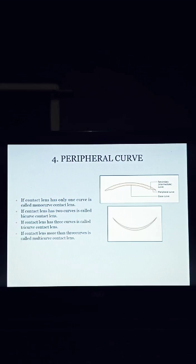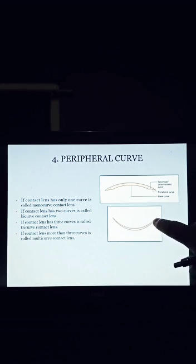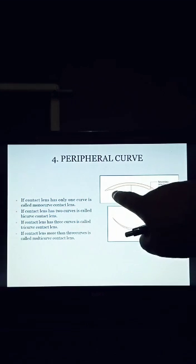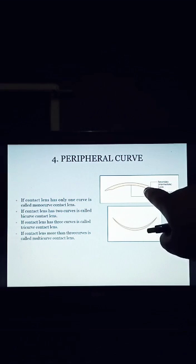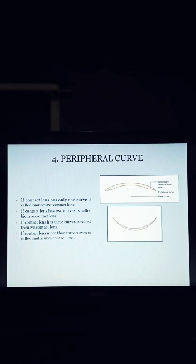Number 4: Peripheral curve. We have different types of peripheral curves. Number 1: Mono-curve. Number 2: Bi-curve. Number 3: Tri-curve. Number 4: Multi-curve. See the diagram — here only one curve, so this is mono-curve contact lens. Bi-curve means here 1 and 2, two curves are there, so this is bi-curve. Tri-curve means 1, 2, 3 — here three curves are there, so this is tri-curve contact lens. And multi-curve means if a contact lens has more than 3 curves, it is called a multi-curve contact lens.